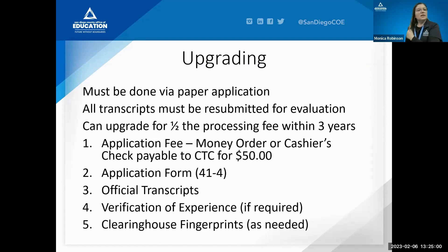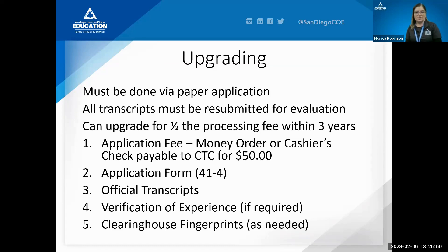When upgrading, someone with a valid permit not expired for over 18 months submits a paper application with all academic qualifications and transcripts. If upgrading within three years of the permit's issue date, some permits allow a half-fee of $50 instead of $100. The consortium forms can also cover this fee. Experience verification and additional fingerprints for school districts may also be needed.